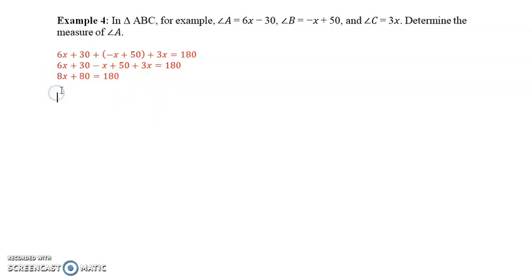We subtract the 80 from both sides. We get 8x equal to 100, and then we divide both sides by 8, and we get x equal to 12.5.